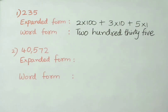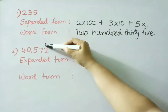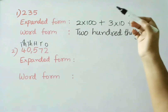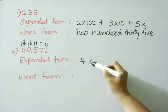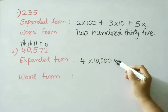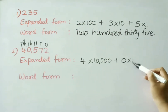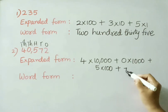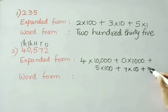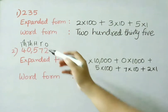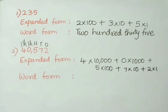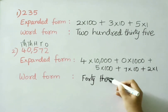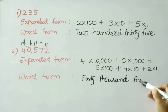See the second one: forty thousand five hundred seventy-two. Write down the places — ones, tens, hundreds, thousands, ten thousands. Ten thousands place: 4, so expanded form is 4 × 10,000. Thousands place: 0, so 0 × 1,000. Hundreds place: 5, so 5 × 100. Tens place: 7, so 7 × 10. Ones place: 2, so 2 × 1. This is the expanded form. In word form: forty thousand five hundred seventy-two.